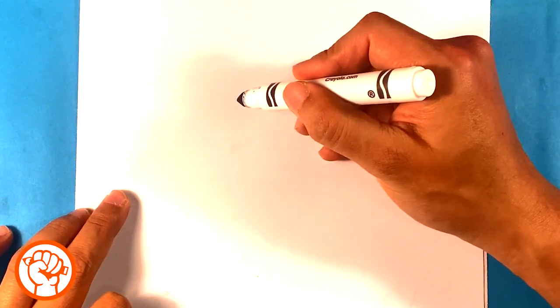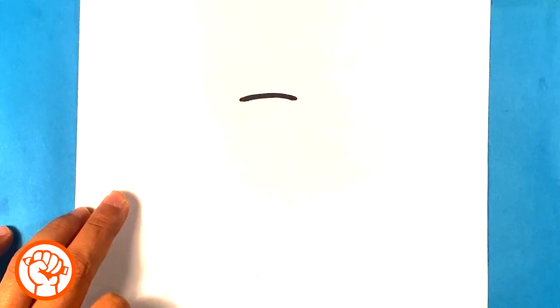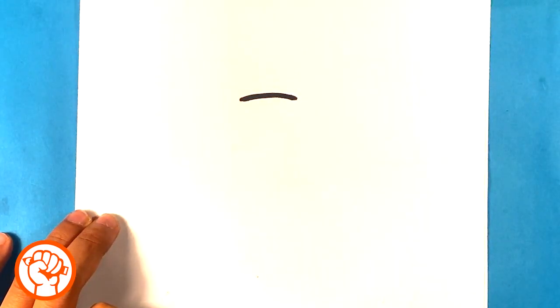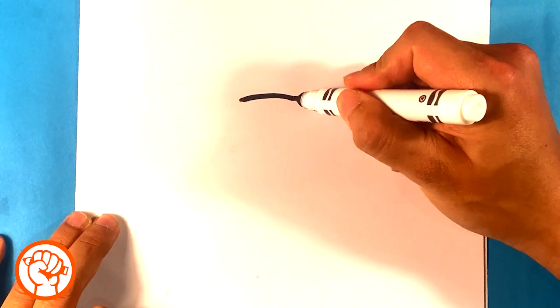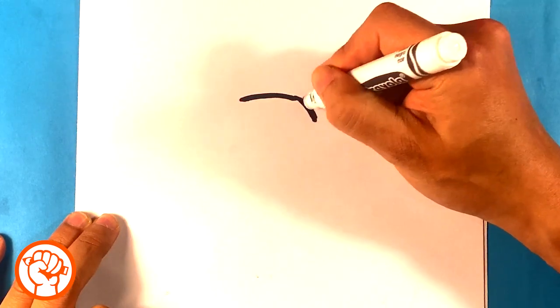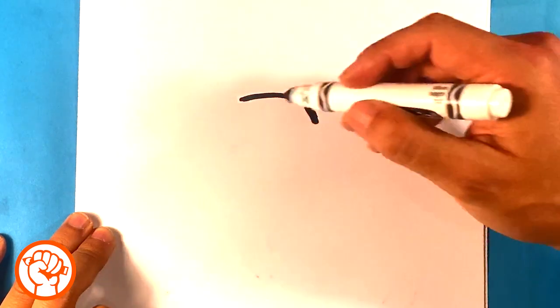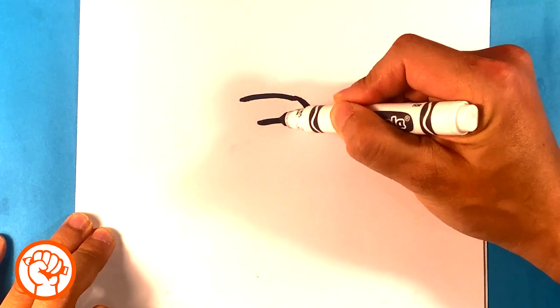First thing I'm gonna do is draw a line, slightly curved for the top of the head. I'm gonna pull downward here and pull down into that visor section, where he sees out of the spacesuit.